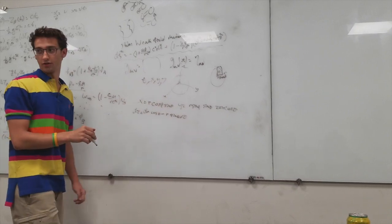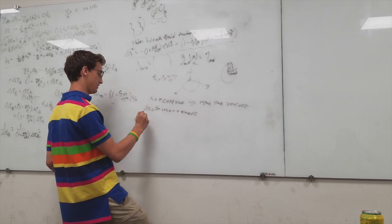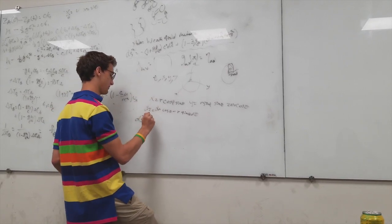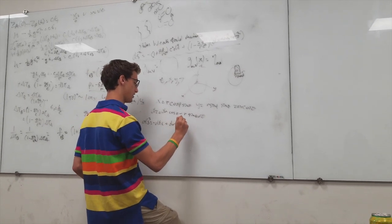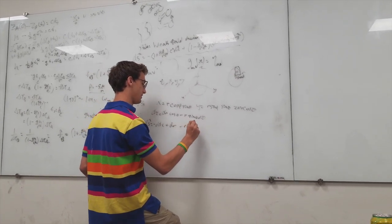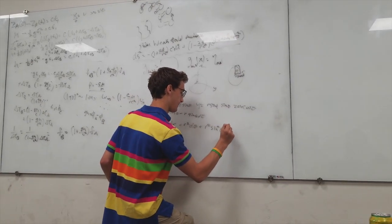And we do this for all the coordinates. What we end up getting is ds squared is just, so time doesn't change, plus dr plus R squared d phi plus R squared sine phi d theta.